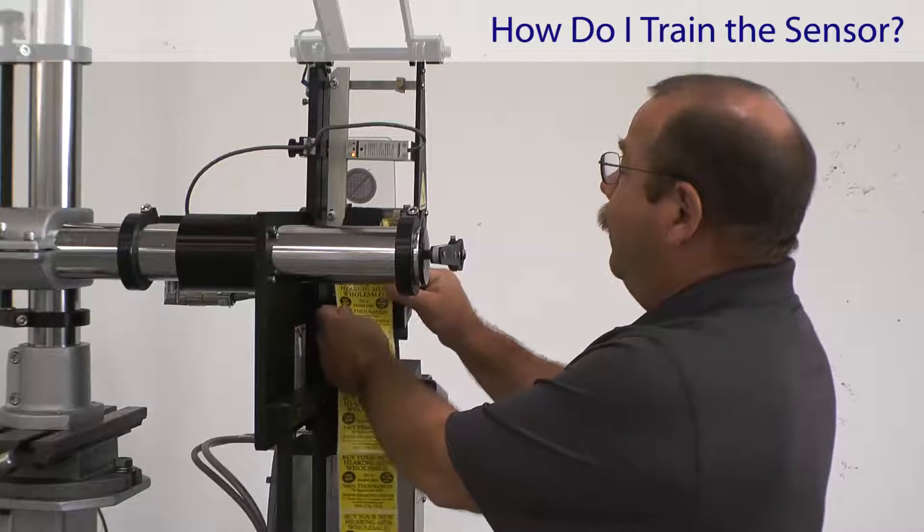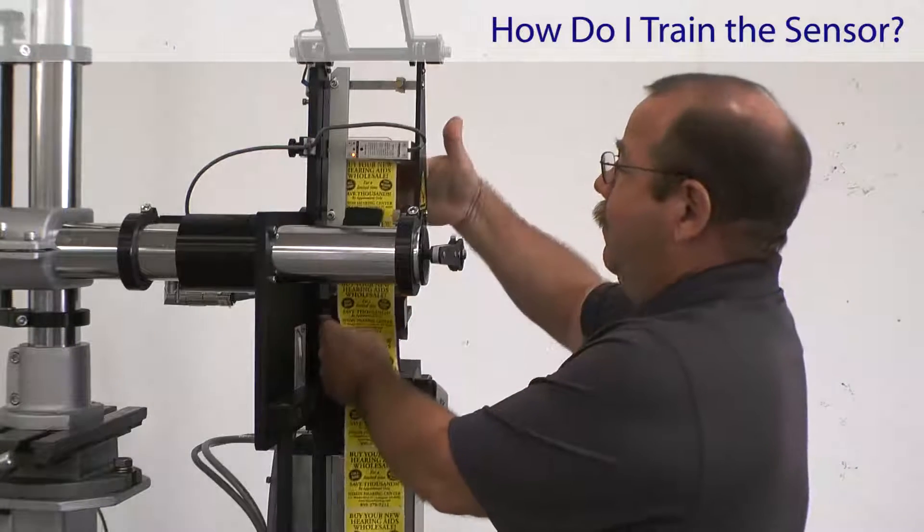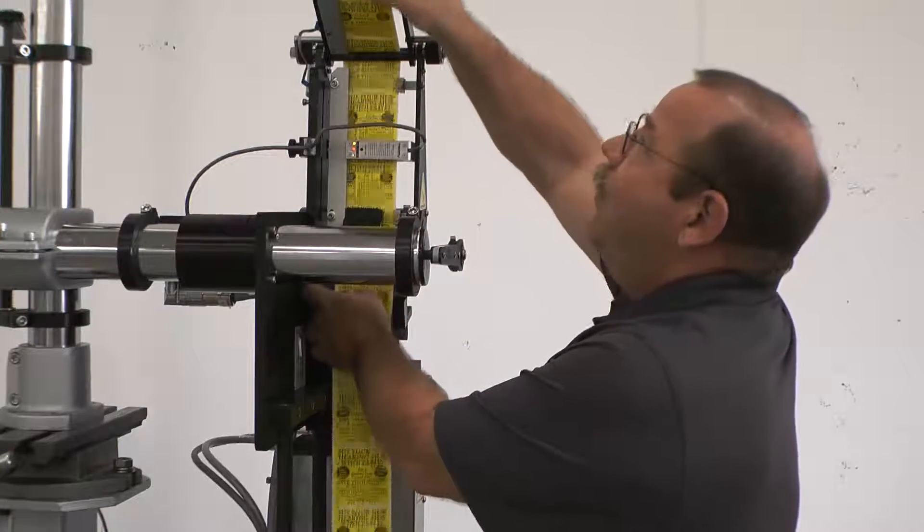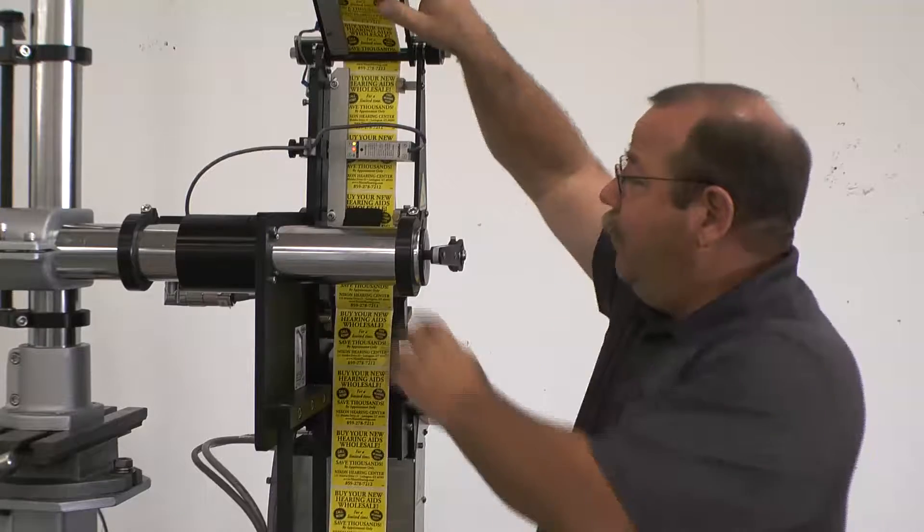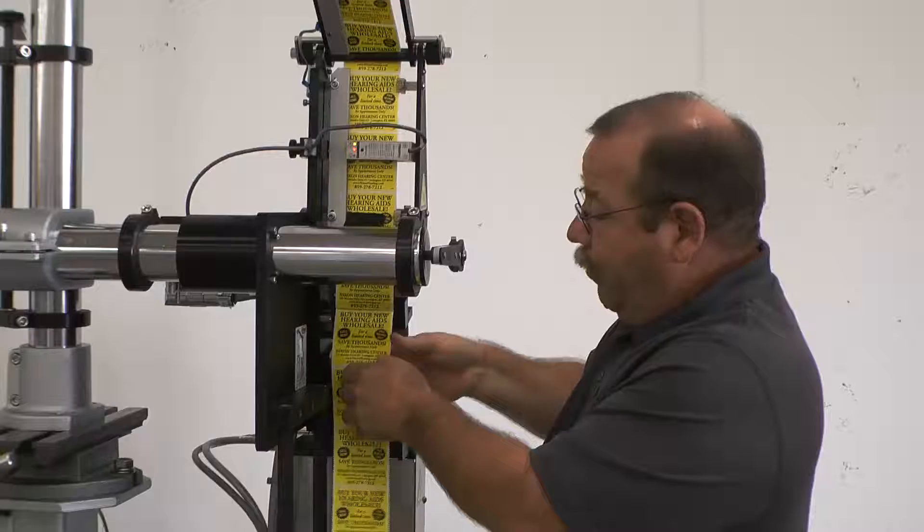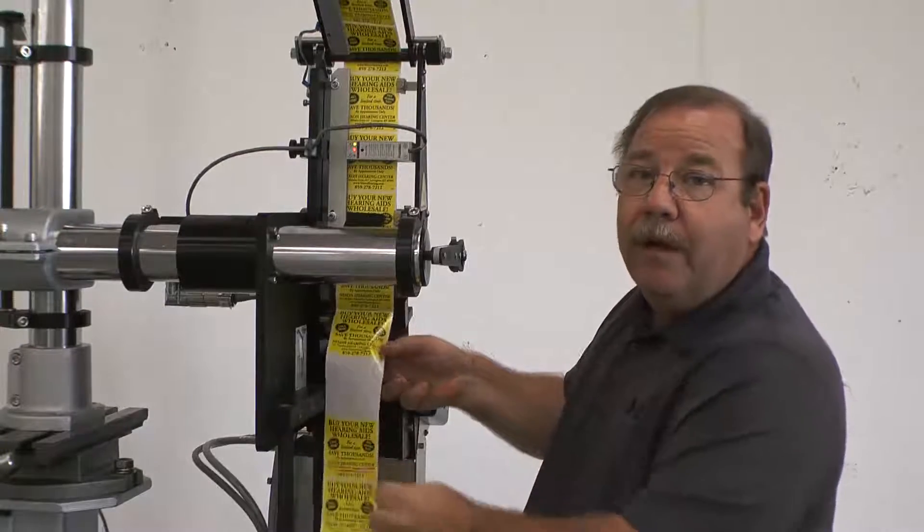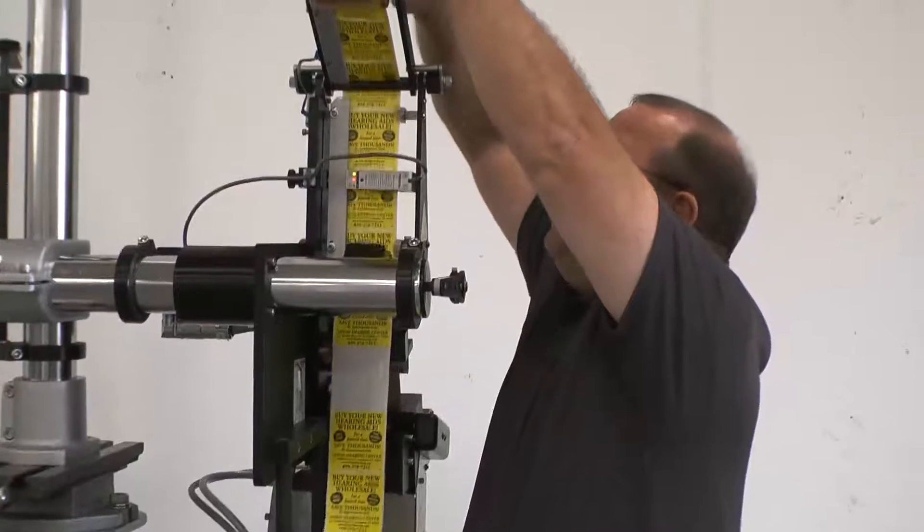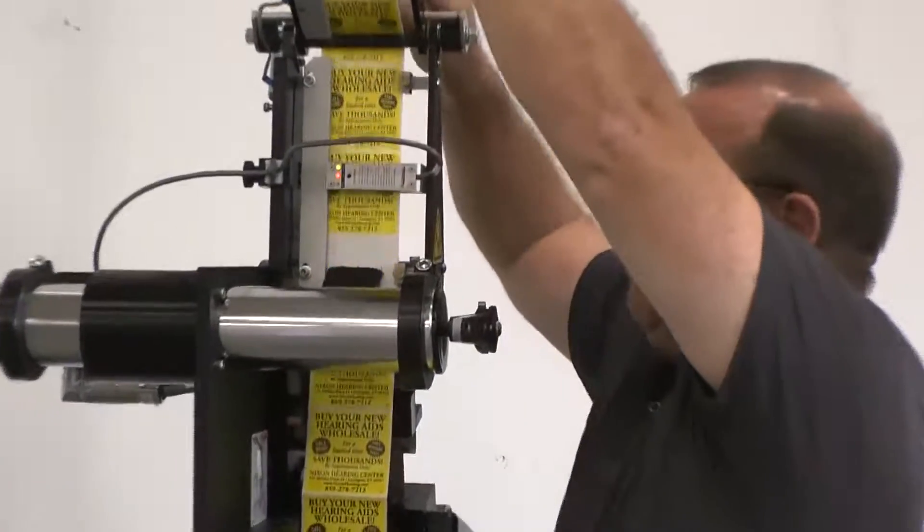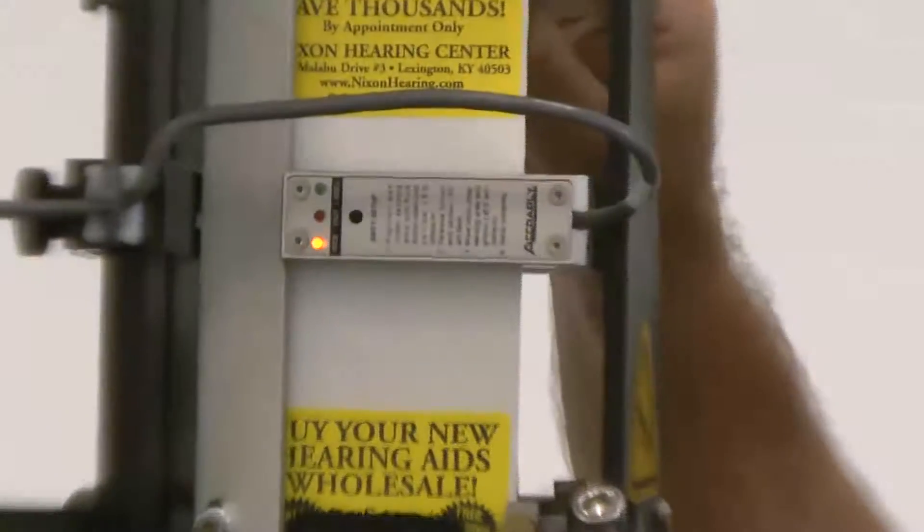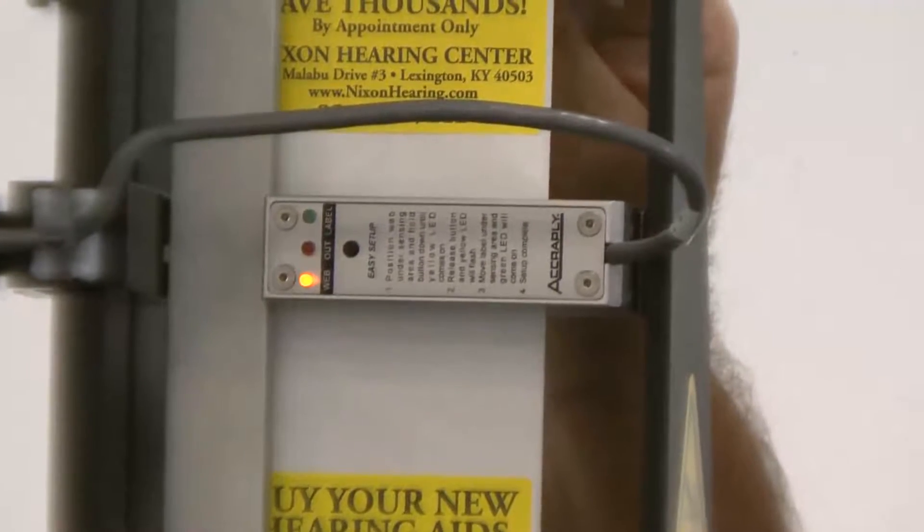Thread the label material into the machine. Once you have it at the tip, put a little pressure on with the brake brush and remove one label from the liner. At this point, pull the material through until that blank spot is under the sensor. Be sure you catch the labels that are coming off the dispense tip.